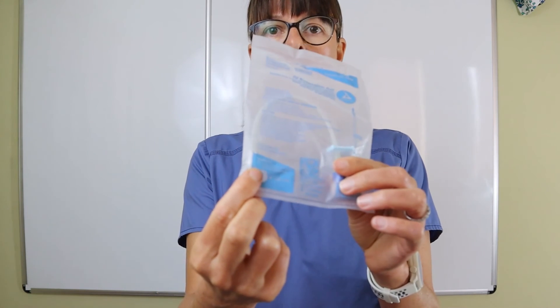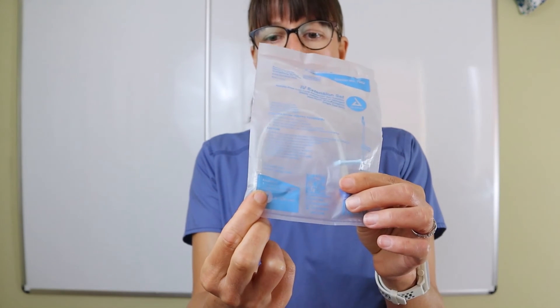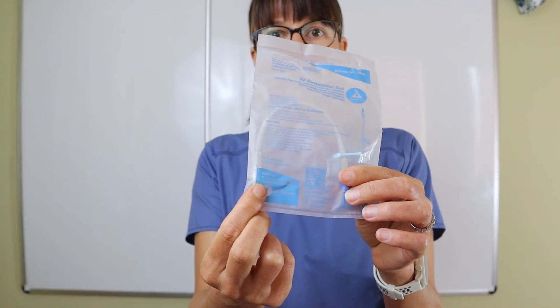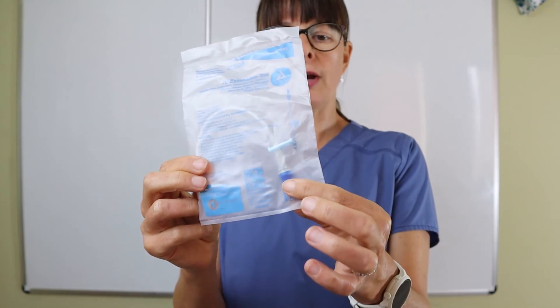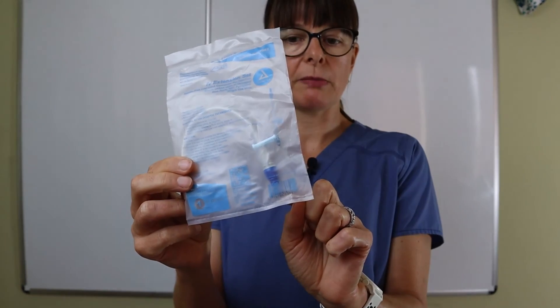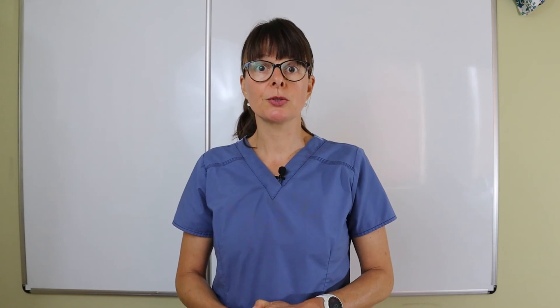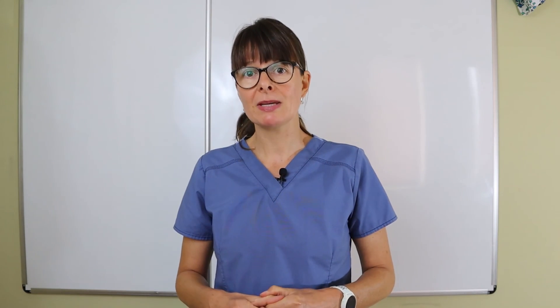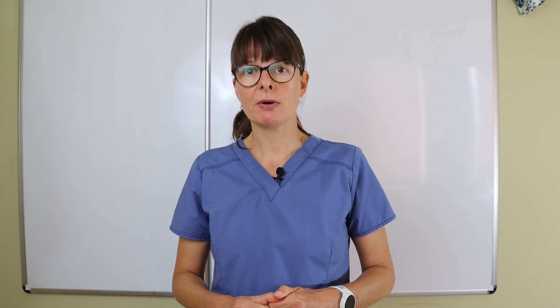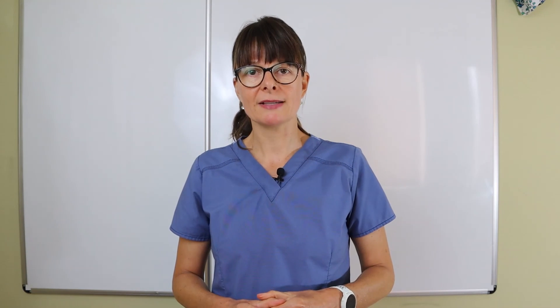This part with the Luer lock will go on to the patient's IV catheter and then be locked here. Then we can hook up the primary tubing right to this port. So these are the most common types of IV tubings that you'll see. Please also check out my other videos where I actually go into priming secondary and primary IV bags and lines.